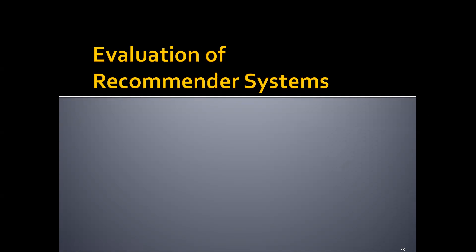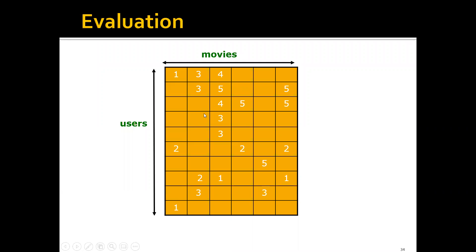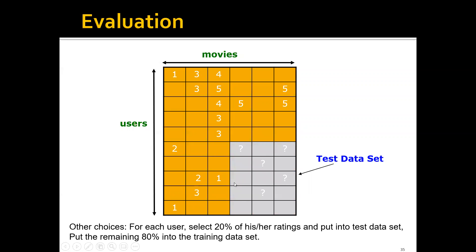Let's talk about the evaluation of recommender systems — basically how to evaluate whether a recommender system is performing well or poorly. We have a rating matrix where each row represents one user and each column represents one movie, with ratings on a scale of 1 to 5. We withhold part of the data as the test dataset and use the remaining ratings as the training set, then evaluate how close our predictions are to the ground truth ratings.